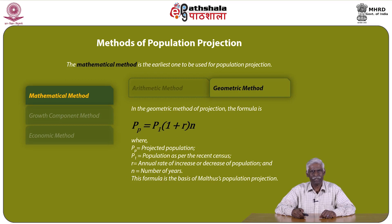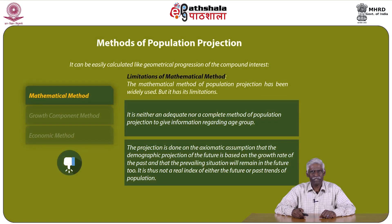The next is the geometric method of projection. The formula is P(p) = P1 × (1 + r)^n, where P(p) is the projected population, P1 is the population as per the recent census, r is the annual rate of increase or decrease of population, and n is the number of years. This formula is the basis of Malthus's population projections. It can be easily calculated like a geometrical progression or compound interest.